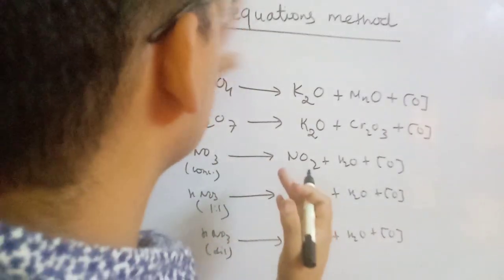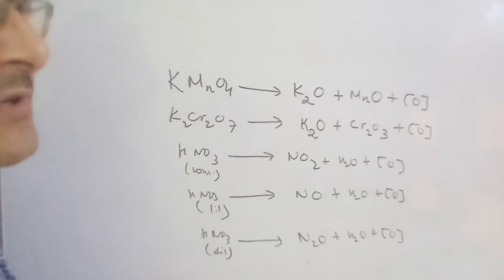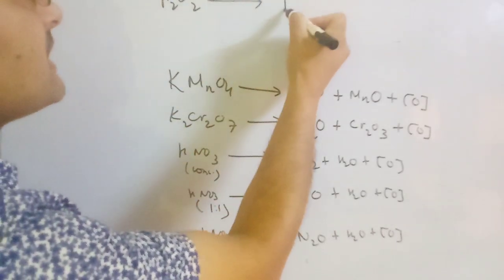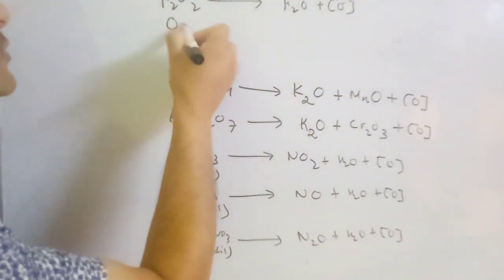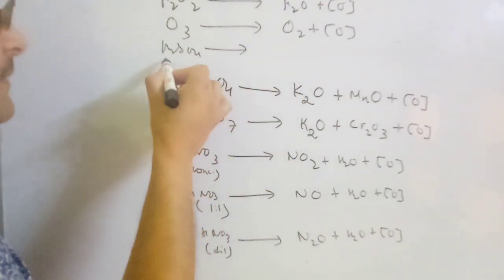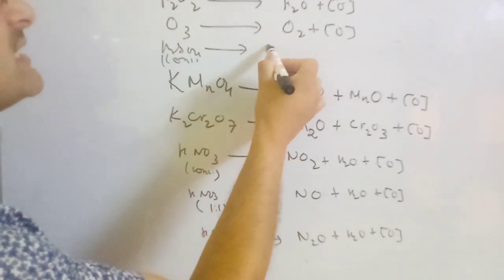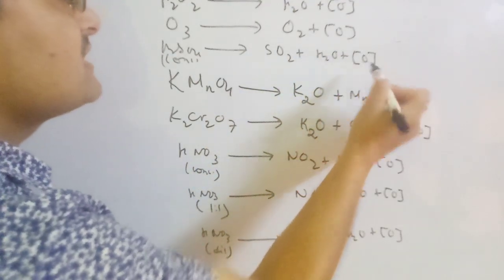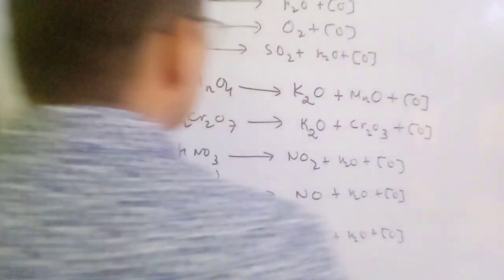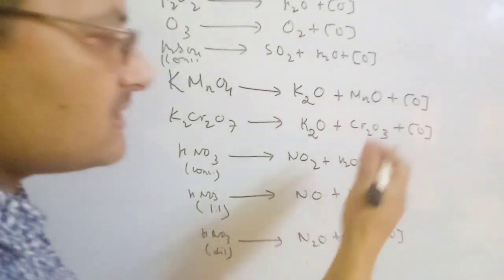These are all partial products. You must know that when these reactants are involved in your reaction, in the first step they decompose into such partial products. If there is H₂O₂, you always make H₂O plus nascent oxygen. If there is ozone (O₃), you always make O₂ plus nascent oxygen. And if you have concentrated H₂SO₄, it decomposes into SO₂ plus water plus nascent oxygen.